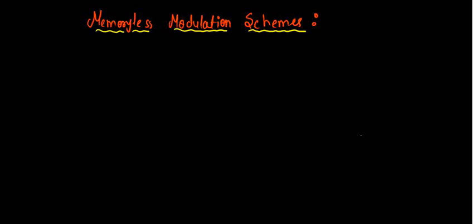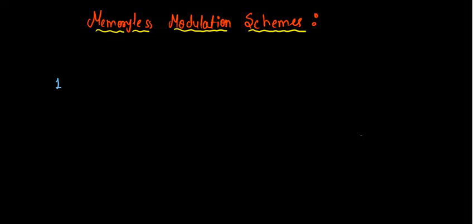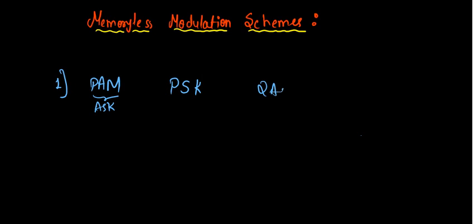Hello all, now I will be discussing modulation schemes. They are classified into memoryless and memory modulation schemes. We will start with memoryless. The broad classification is not that important, so let's focus on Pulse Amplitude Modulation (PAM) first, then PSK which is Phase Shift Keying, also called ASK, then QAM, FSK, and so on.